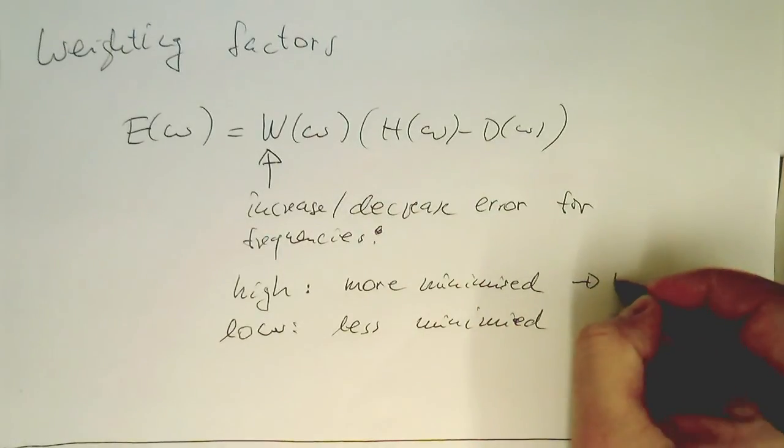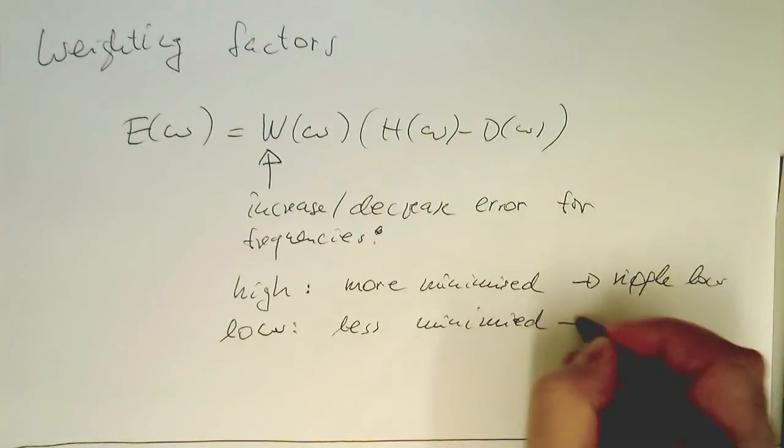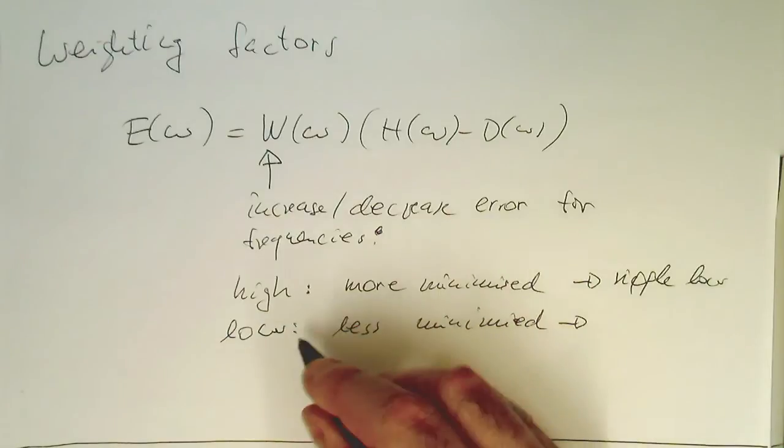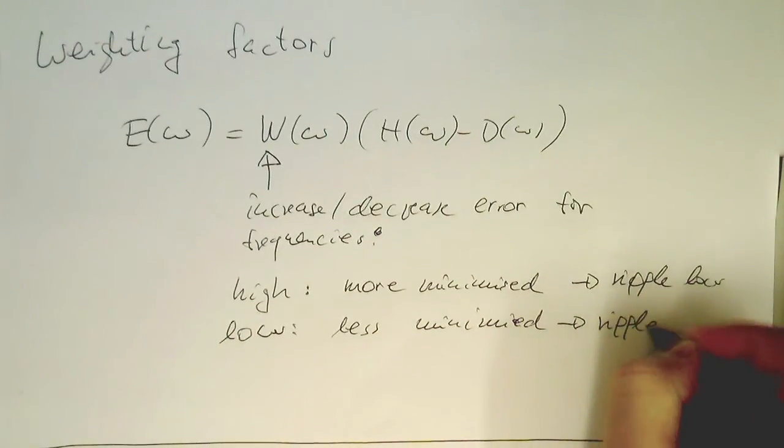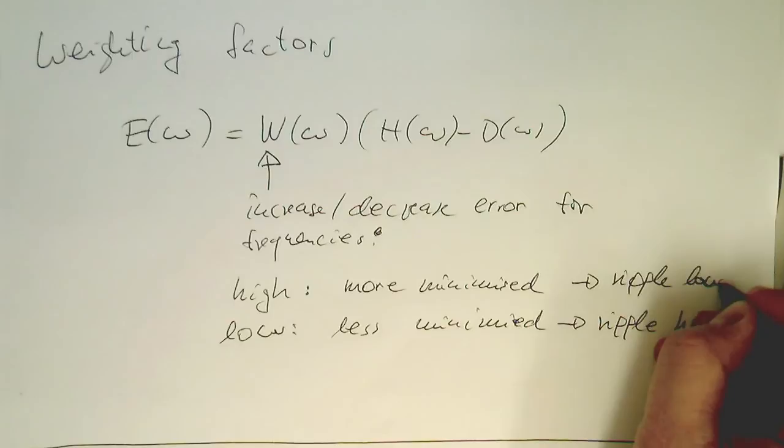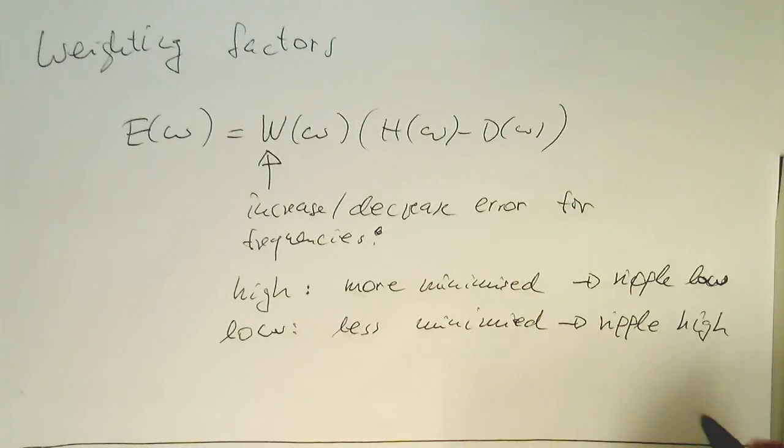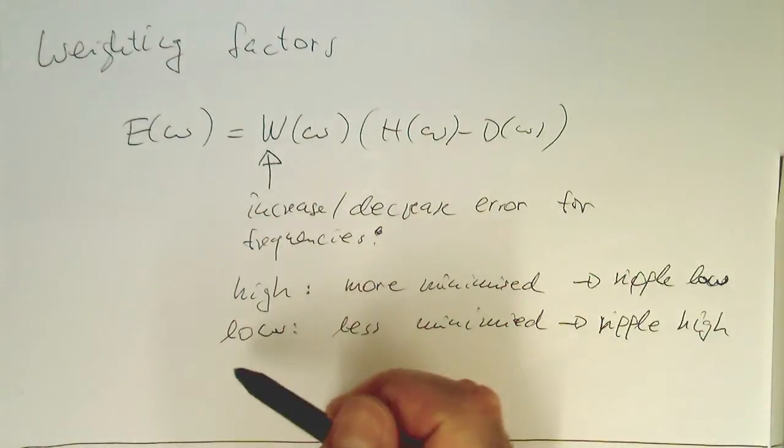And if this weight is low, then this frequency is less minimized. If this is high, this means that the ripple is low. And if this factor is small, then the ripple is high at this point. With these weighting factors, we can weight relatively the ripple.